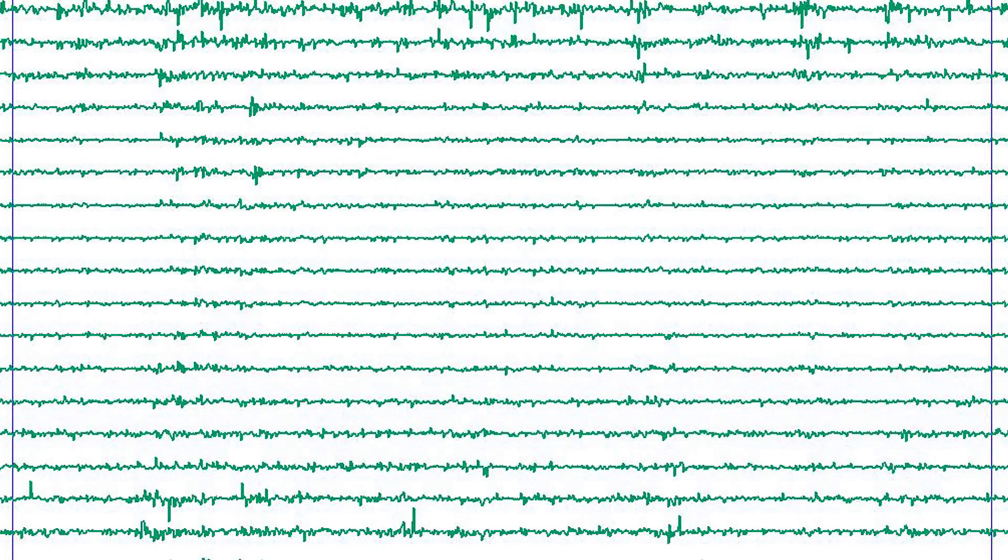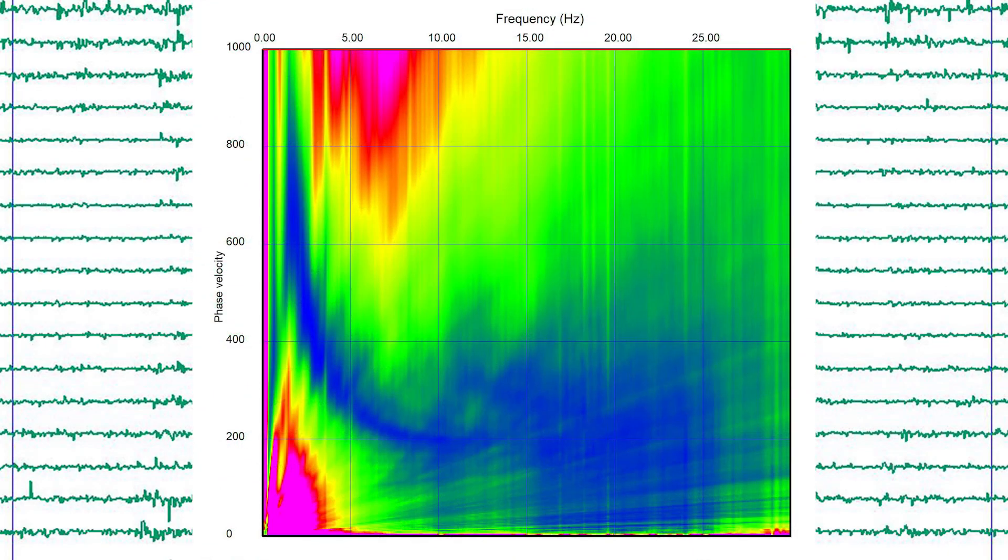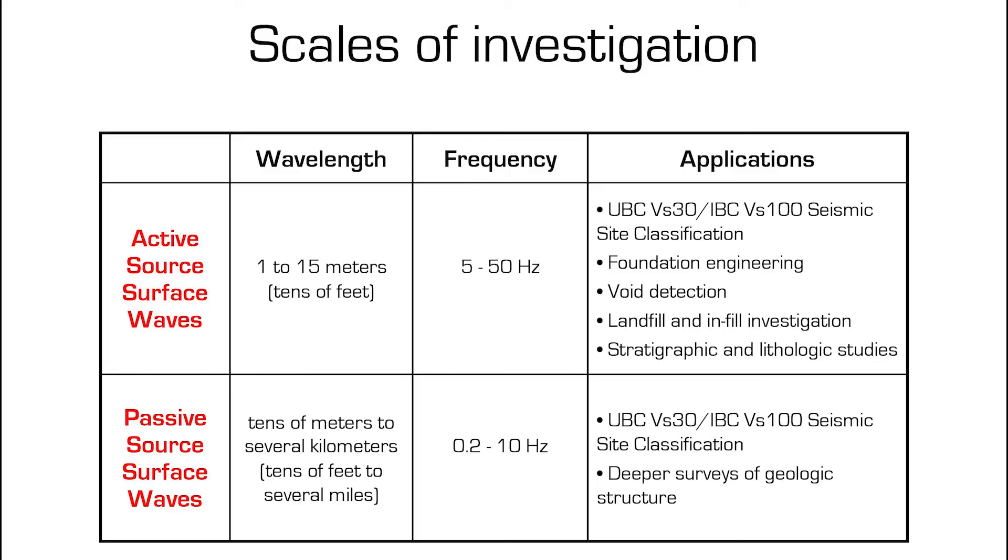A Fourier transform decomposes raw seismic data which then can be plotted as a frequency-phase-velocity diagram. Active source MESW can generate surface waves with wavelengths of 1 to 50 meters, which have a frequency of 5 to 50 hertz. Very high energy sources like explosives can generate even lower frequency surface waves.